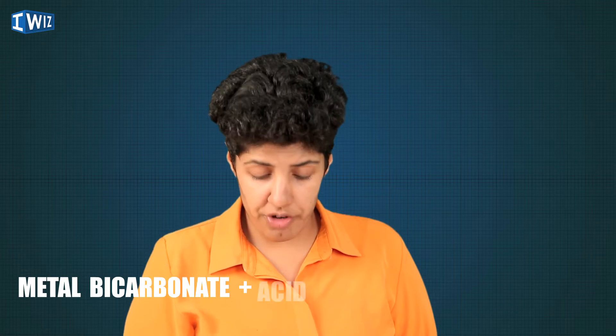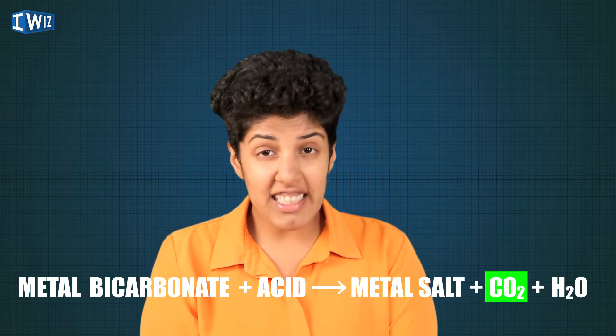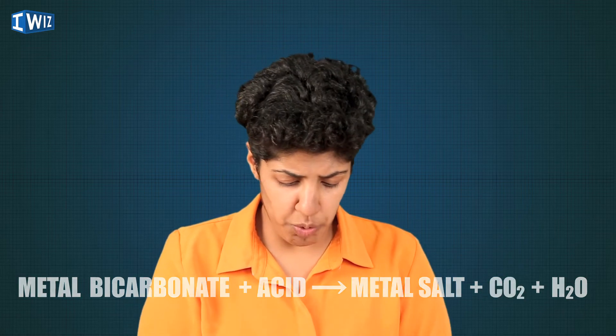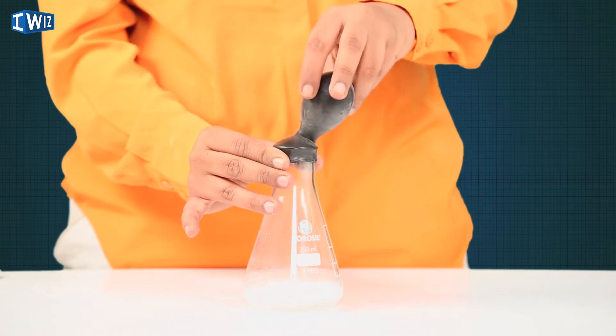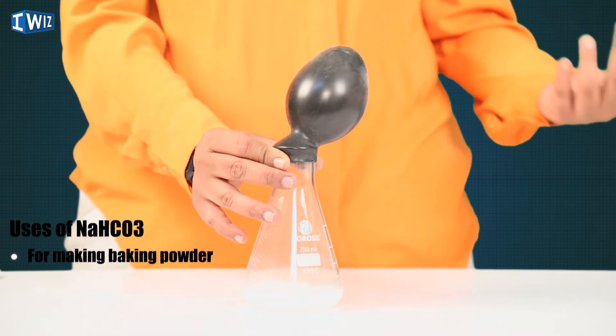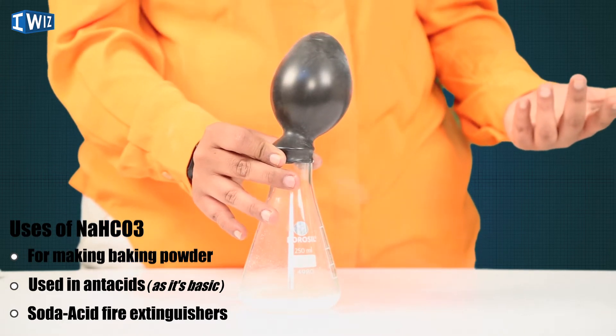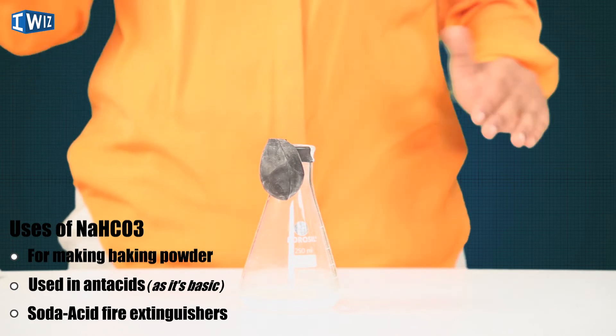Next I want to show you how it reacts with an acid. I have hydrochloric acid over here and some sodium hydrogen bicarbonate. This reacts a lot like any metal bicarbonate — a metal bicarbonate reacts with an acid to give you carbon dioxide, water, and the metal salt. This carbon dioxide is used in fire extinguishers. If I put this in, you can see it spills up. This gas is carbon dioxide and we use it to extinguish fires and in baking soda and vinegar rockets.